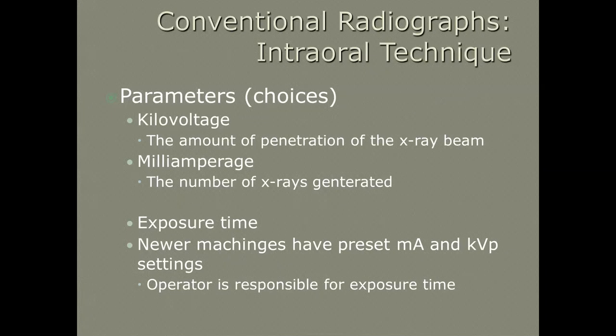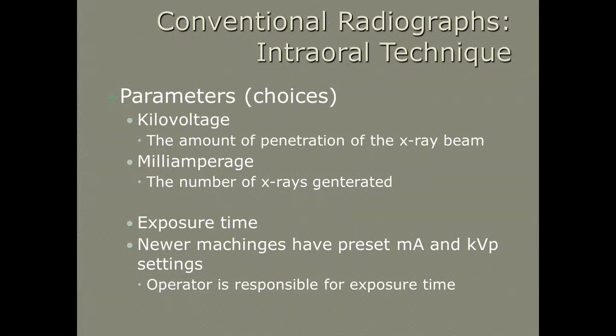You've got your kVp, your milliamperage, and your exposure time — those are the things that can change. kVp is the amount of penetration or power of the x-ray beam, the voltage. I always remembered 'P' for kVp for penetration and 'V' for voltage. Milliamperage has to do with the number or quantity of x-rays being generated, so milliamperage is the quantity versus kilovoltage is the quality.